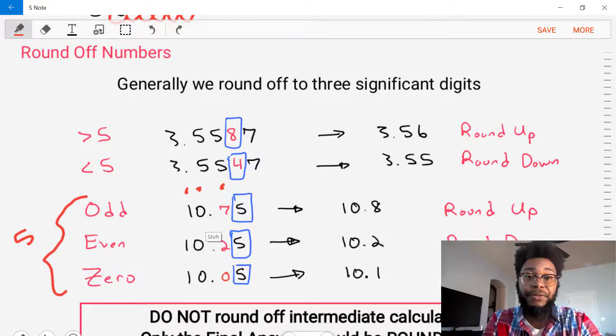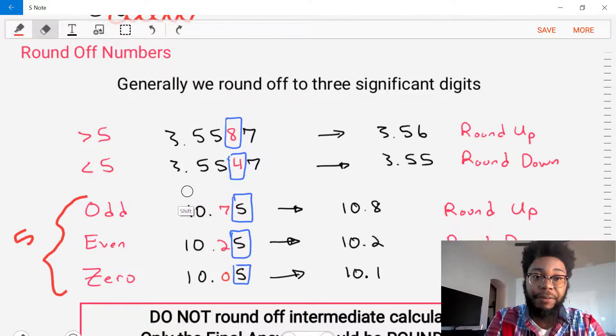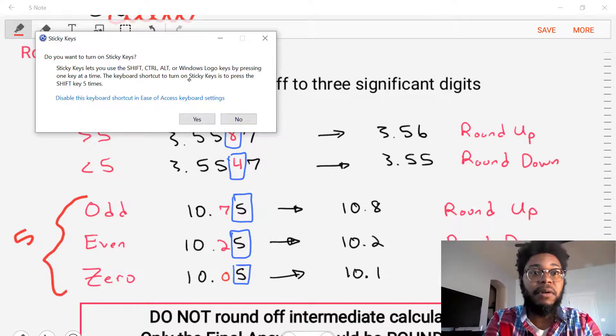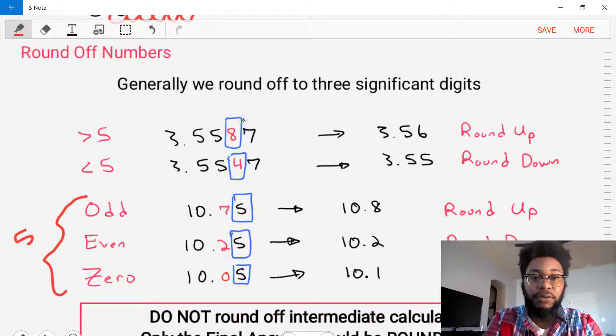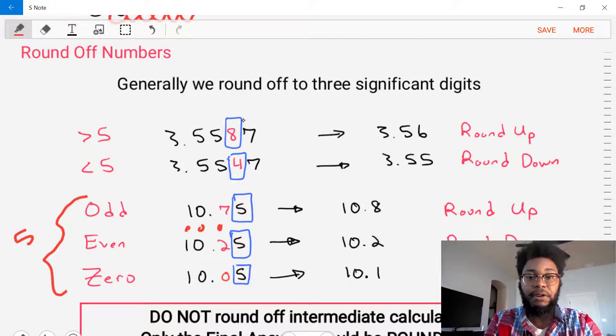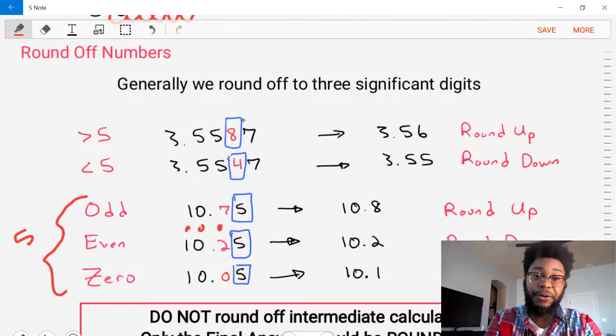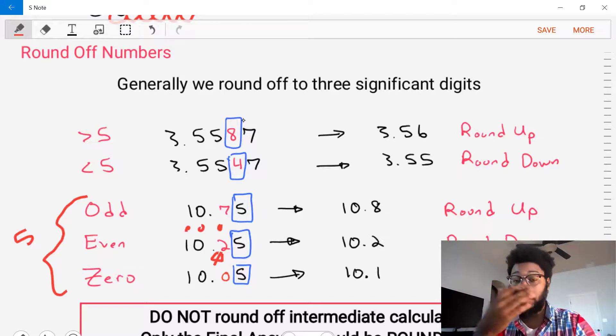Now what happens if we have an even number? What if we had 10.25? So we've got three significant digits, 10.2, and then our fourth number is a 5. We examine our third number. We see that two is an even number. So what do we do? In this case, we're going to round down. So we'll end up with 10.2.